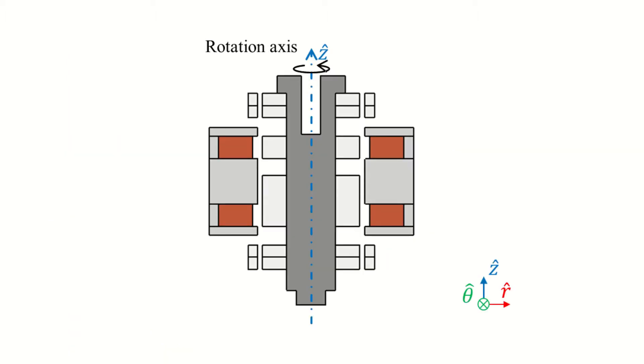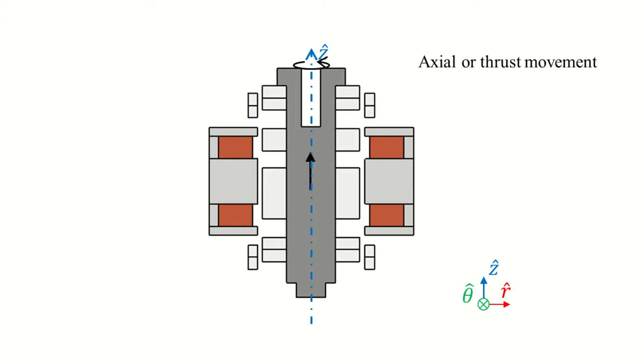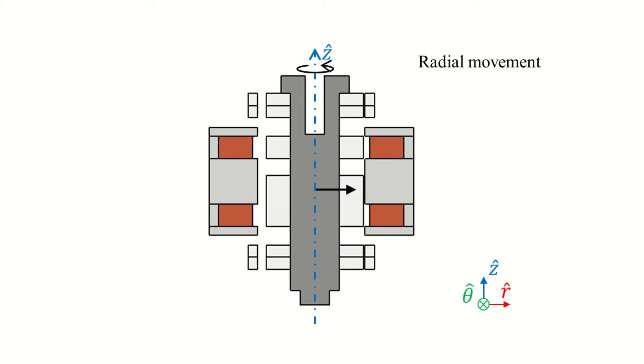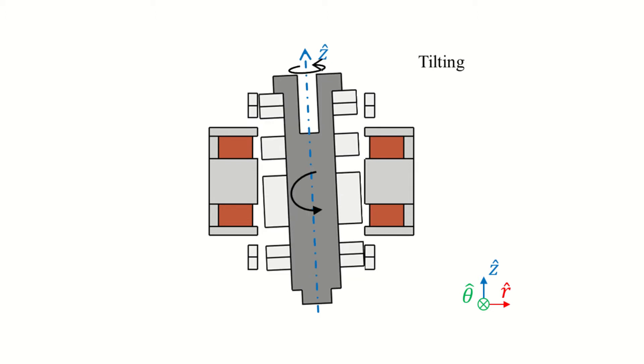First, we should name properly the directions in which the rotor can move. If the shaft rotates around the z-axis like shown in the figure, displacement along the z-axis is called axial or thrust movement. Displacement in a plane that is normal to the z-axis is called radial movement. Inclination of the rotating shaft is called tilting.